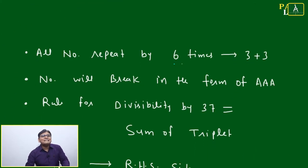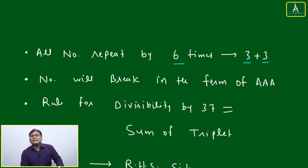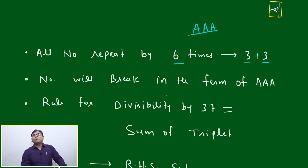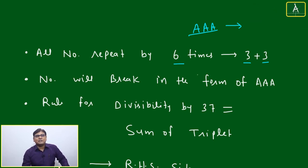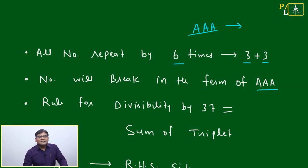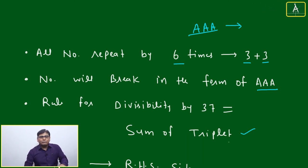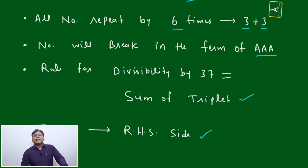Let us follow a few steps. Here, all digits repeat 6 times. 6 means 3 plus 3. We consider groups of 3 because in the form of AAA we have a shortcut rule for dividing by 37. The number will be broken into triplets of the form AAA, and then the rule for divisibility by 37 is: take the sum of the triplets, always from the right-hand side.